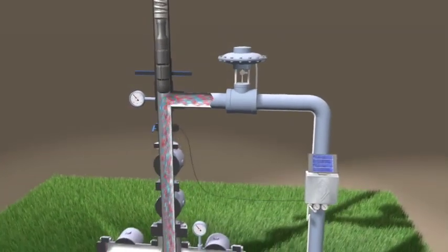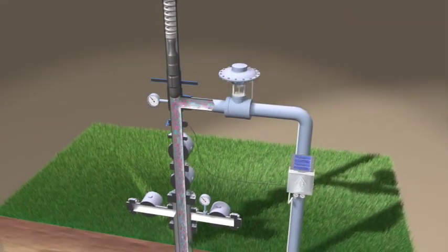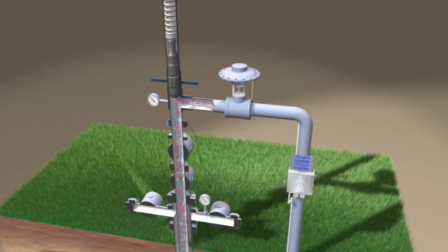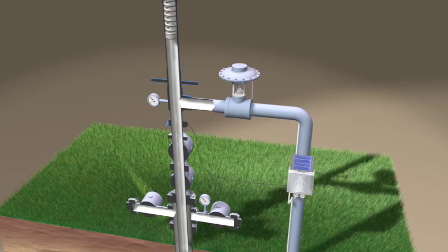The controller detects the plunger arriving at the surface, and the well is allowed to flow. After a period of time, the controller closes the motor valve, allowing the plunger to fall. These cycles are automatically repeated several times each day.